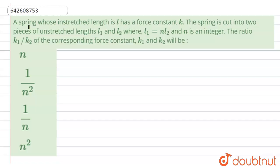Hello everyone. The question says that a spring whose unstretched length is L has a force constant K. The spring is cut into two pieces of unstretched lengths L1 and L2, where L1 = NL2 and N is an integer. The ratio K1/K2 of the corresponding force constants K1 and K2 will be?